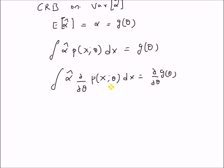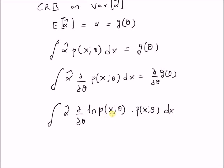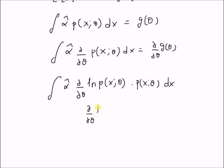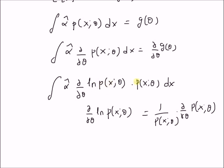The derivative of the probability distribution can be rewritten as the integral of alpha-hat times the derivative of the log-likelihood function multiplied by the probability distribution dx. This is because the derivative of log P(x; theta) equals (1/P) times dP/dtheta. So the 1/P and P(x; theta) terms cancel, leaving the first derivative of the distribution. The derivative of the log-likelihood function equals (1/P) times the derivative of the distribution. Inserting this formula back gives the original integral, equal to the derivative of the function G(theta).